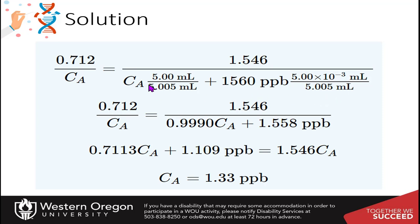So we can just solve then our equation here for Ca and do the math. And we end up with the concentration of the analyte as 1.33 parts per billion.